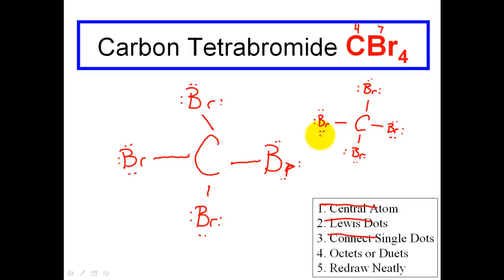And guys, that's basically what Lewis dot structures are. Those are the steps for drawing Lewis dot structures for covalent compounds. We're using Lewis dot structures to illustrate and have a clearer understanding of what a covalent bond is. Thanks for tuning in, have a great day.